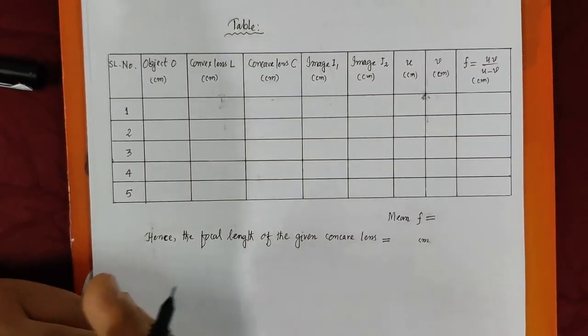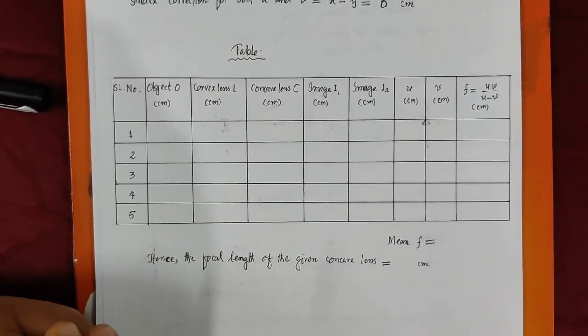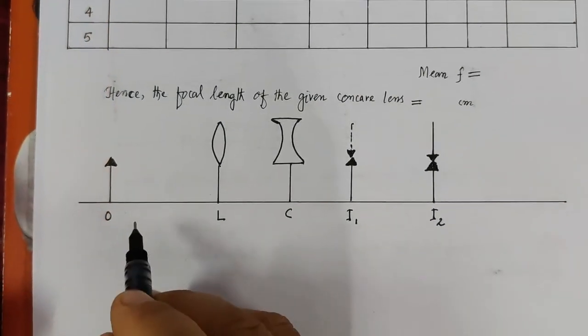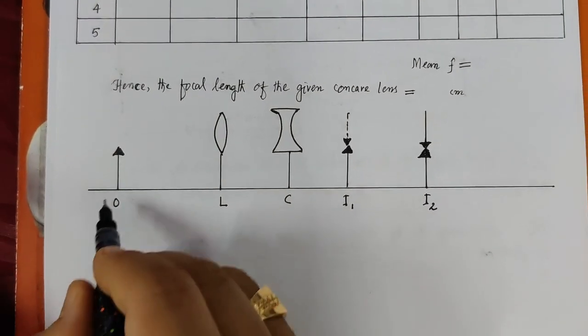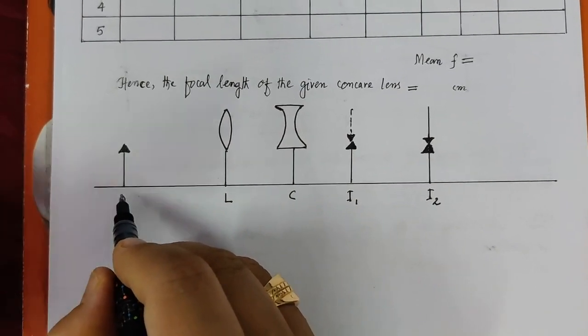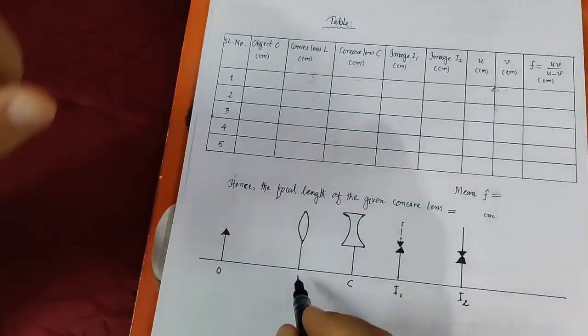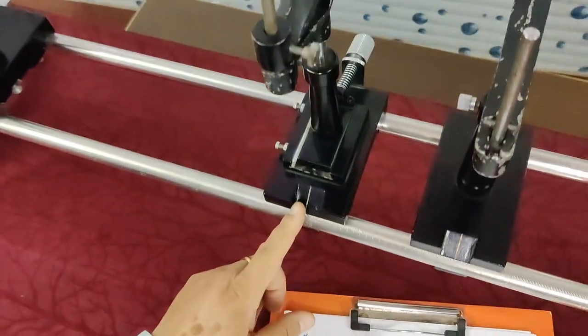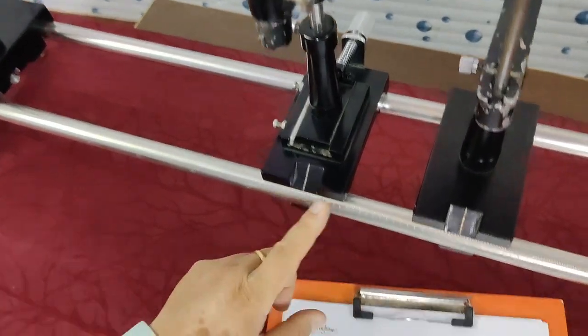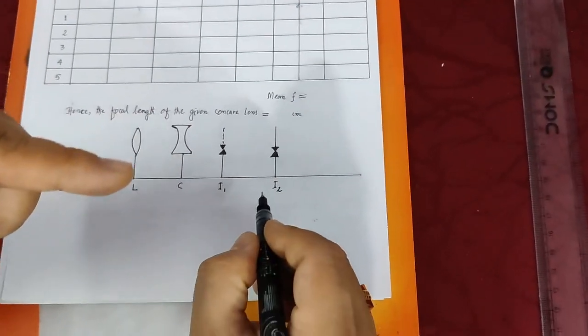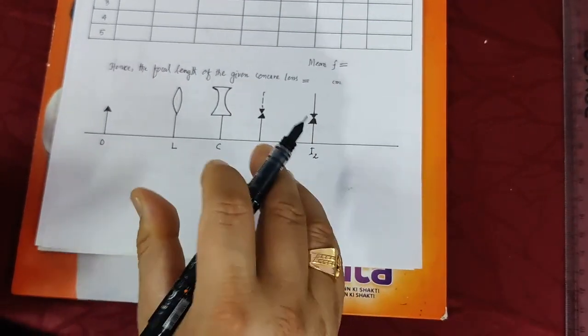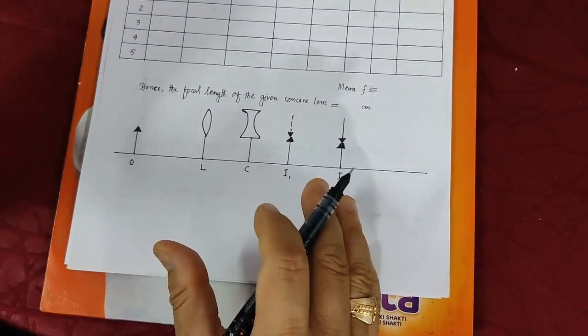Now let's start taking the observations one by one. This is the rough diagram of the experiment. This is the object pin O, which is fixed at 0. This is the position of the convex lens. Then the concave lens is placed to get the intermediate image I1, and then the final image I2.